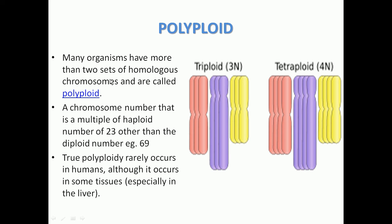Many organisms have more than two sets of homologous chromosomes. Each set — shown here in red, purple, and yellow — represents a set of chromosomes. There should be two chromosomes in each set: one from the father and one from the mother.